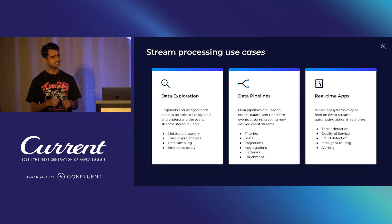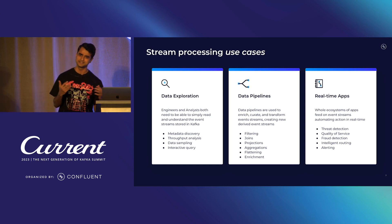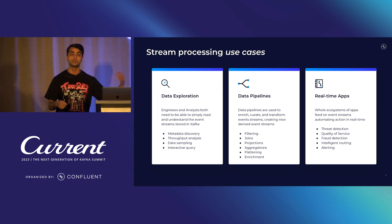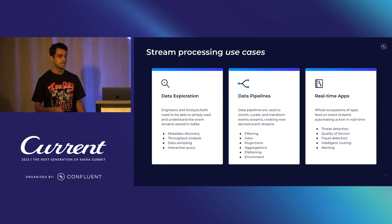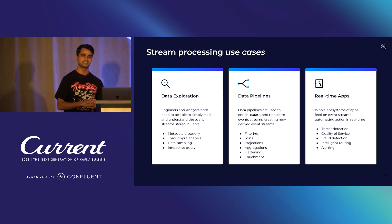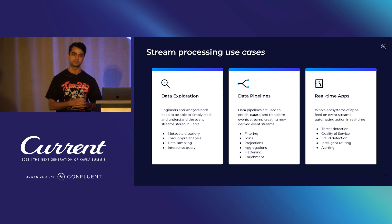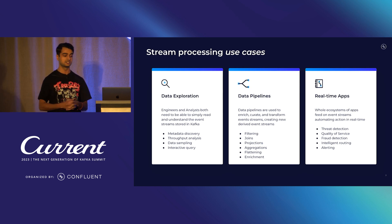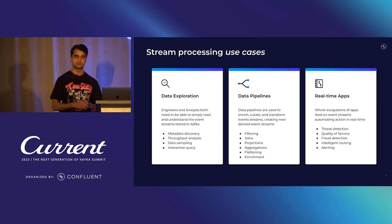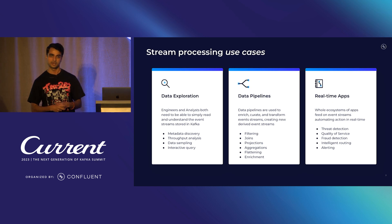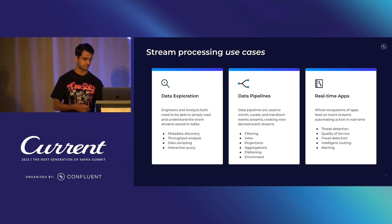Data pipelines are about filters and aggregations — batch pipelines, serial pipelines, streaming pipelines. The same operators just happen in real-time with variable throughput coming in. And finally, real-time apps — the most exciting part — where you can actually build full applications. Examples include threat detection, quality of service on a factory floor, fraud detection in financial services, intelligent routing in IoT, and real-time alerting. All of these are use cases for stream processing.